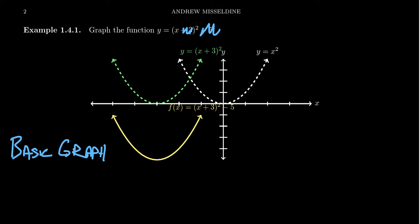if we ignore this plus 3, our function looks just like y equals x². And so that's the basic graph here, y equals x².